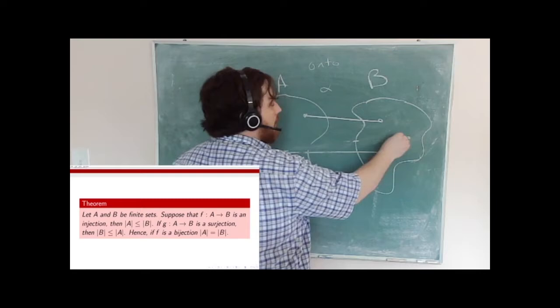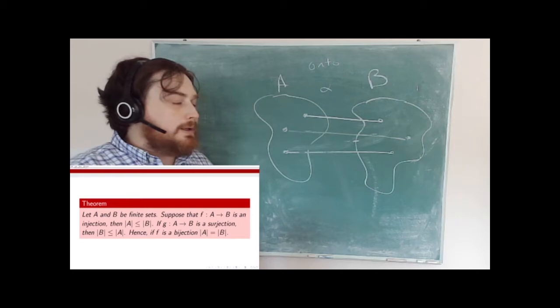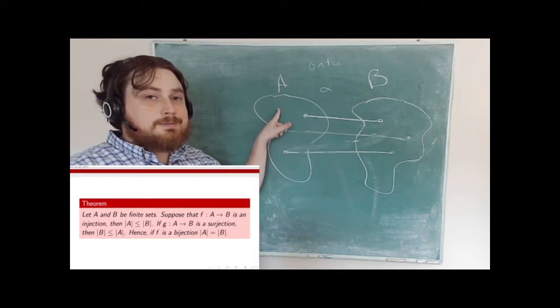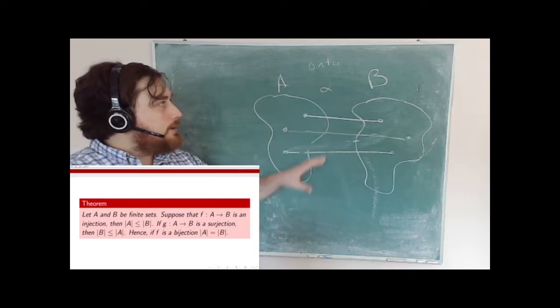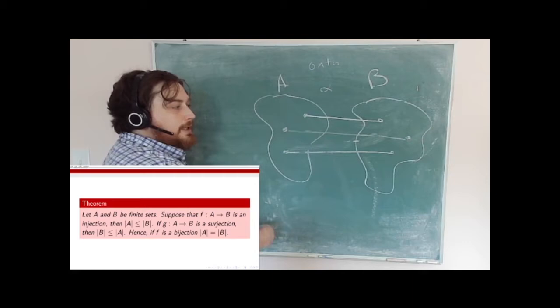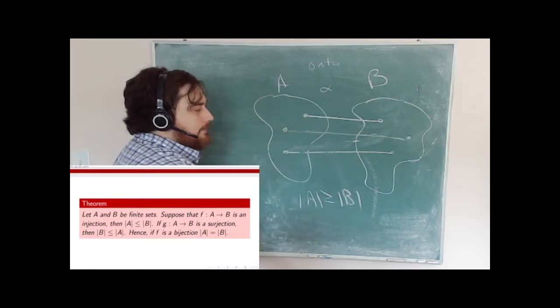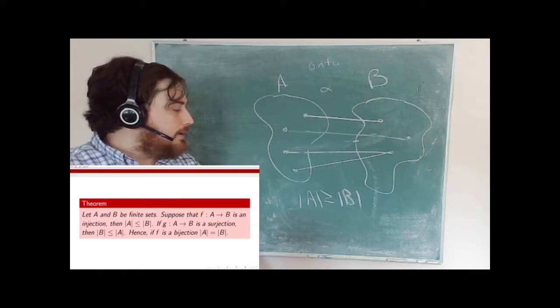For everything in B, I can find some unique element of A which gets mapped to that element in B. Every time I put an element in B, I have to put a new one in A, because it can't be one of the old ones — otherwise it's not a mapping. So for every element in B, I get at least one element in A. Therefore, if I can find an onto mapping from A to B, there have to be at least as many elements in A as in B, so the cardinality of A is greater than or equal to the cardinality of B. It can be bigger, because two things can map to one, but it has to be at least as big.